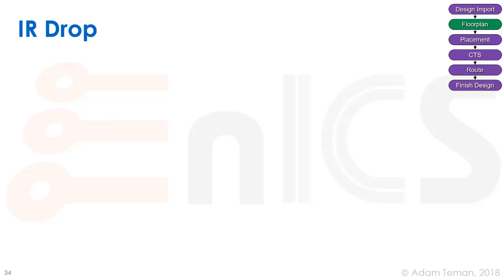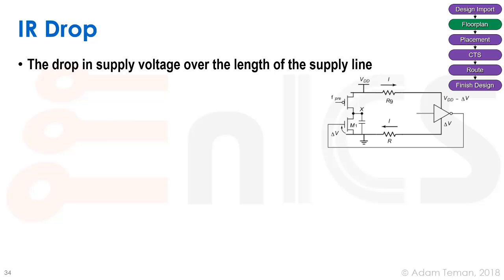IR drop is the drop in supply voltage over the length of the line. If we have an inverter driving another inverter, with VDD and ground connected via a resistive line, the current through the resistance creates a voltage drop ΔV. So the inverter receives VDD minus ΔV, and there's another ΔV on the return path through ground — giving us a ΔV on the output too, which feeds the next stage.